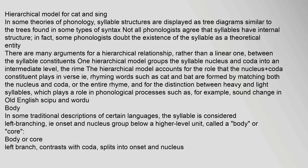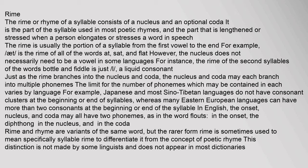The rhyme of a syllable consists of a nucleus and an optional coda. It is the part of the syllable used in most poetic rhymes, and the part that is lengthened or stressed when a person elongates or stresses a word in speech. The rhyme is usually the portion of a syllable from the first vowel to the end. For example, 'at' is the rhyme of the words 'at,' 'sat,' and 'flat.' However, the nucleus does not necessarily need to be a vowel — in some languages, the rhyme of the second syllables of words like 'bottle' and 'fiddle' is just 'l,' a liquid consonant.